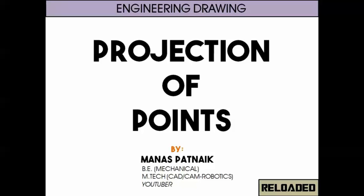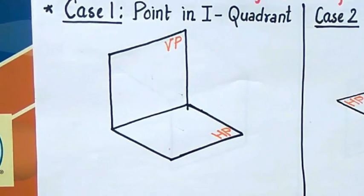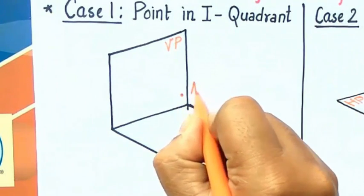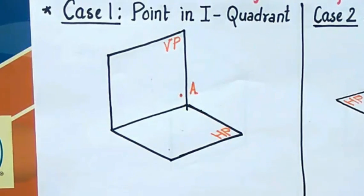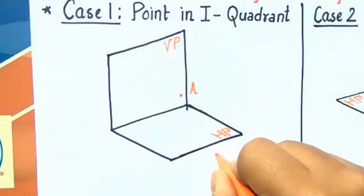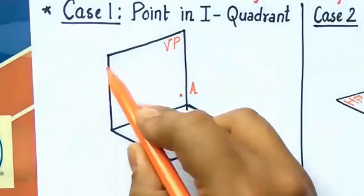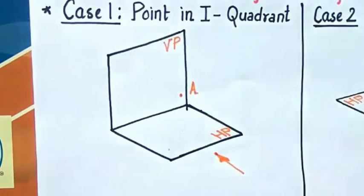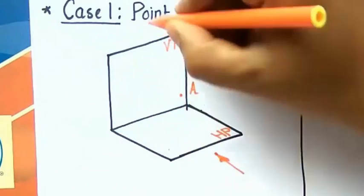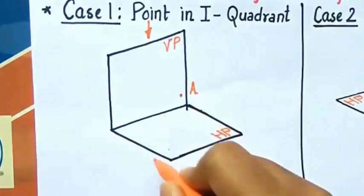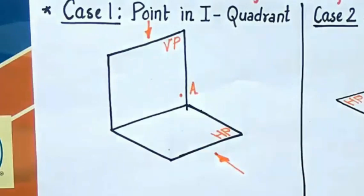Now let's understand all of this with the help of a pictorial representation. This is going to be case one, where I'll be discussing the projection of a point. Let us say that the point we have is here, represented by point A. We are going to look at this point from two different views — right from the front, which will be the front view obtained in the VP, that is the vertical plane, and also from the top, giving us a top view on the horizontal plane.